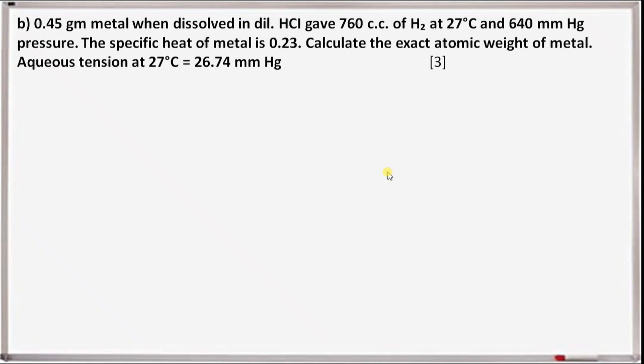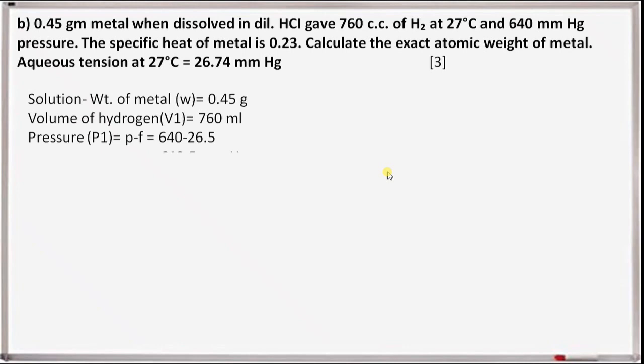Weight of metal W equals 0.45 grams. Volume of hydrogen V1 equals 760 ml. Pressure P1 equals P minus aqueous tension equals 640 minus 26.5 equals 613 mmHg. T1 equals 27 plus 273 equals 300 Kelvin.